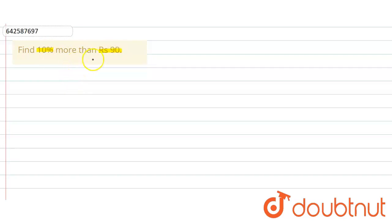First we find out the 10% of rupees 90. So 10% of rupees 90, that is equal to 10 into—the meaning of this percent sign is 1 divided by 100—and it is 90.